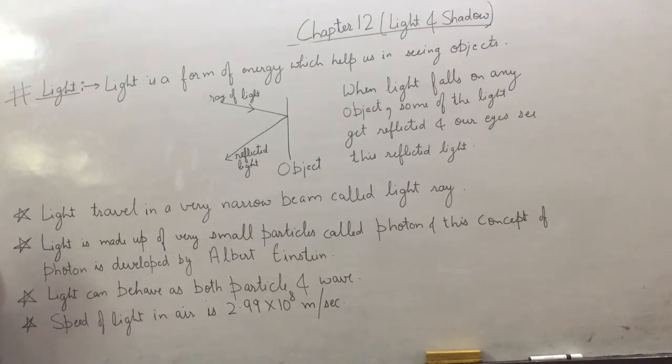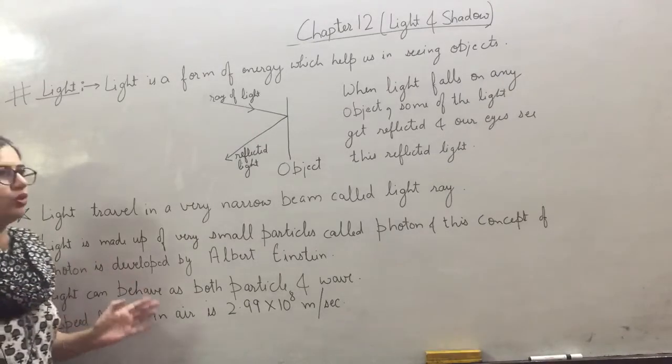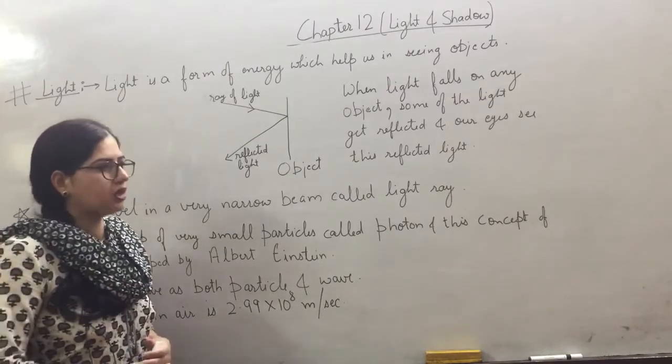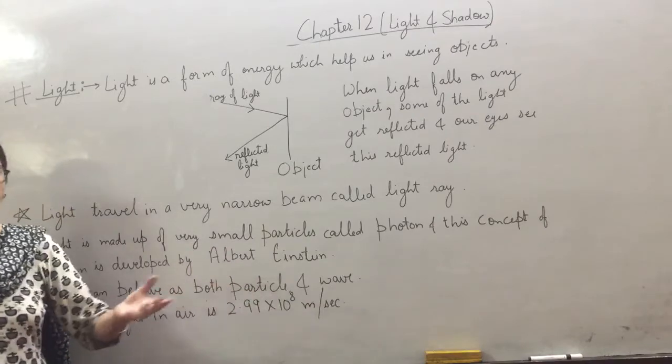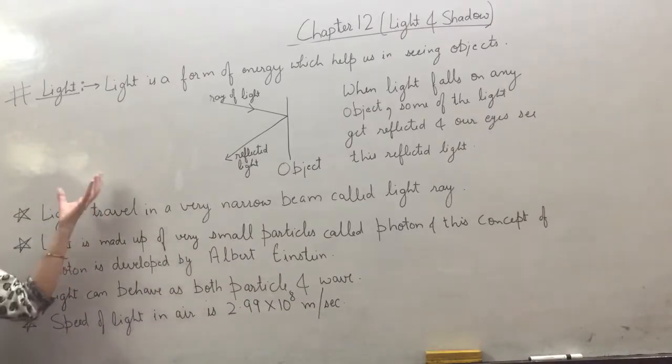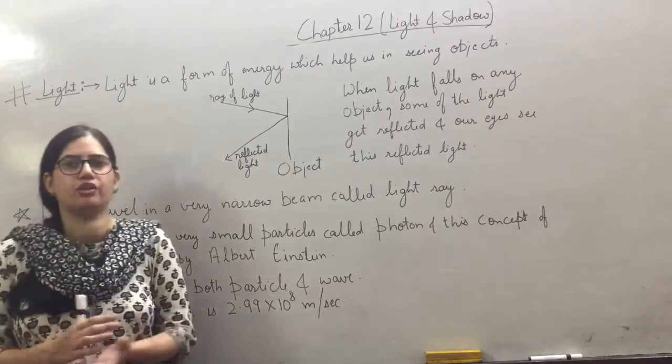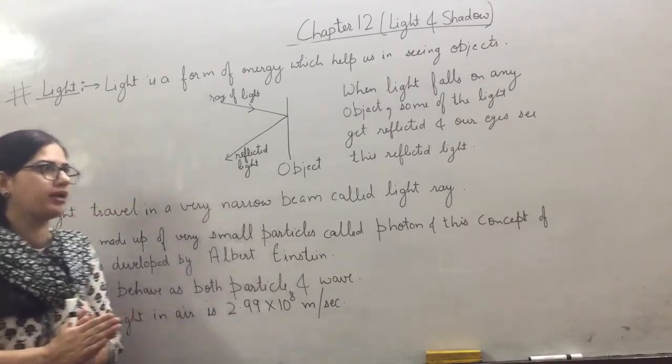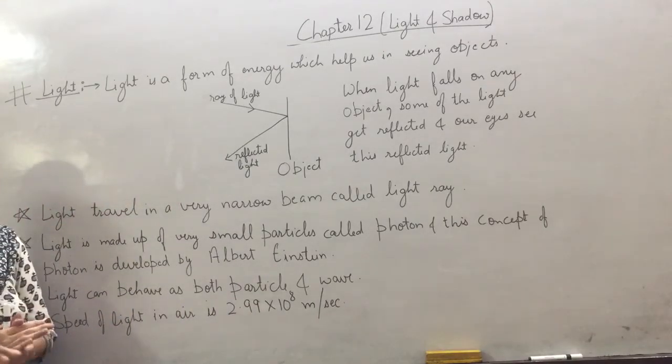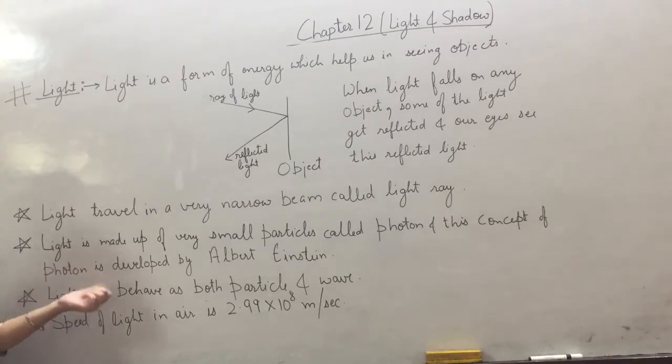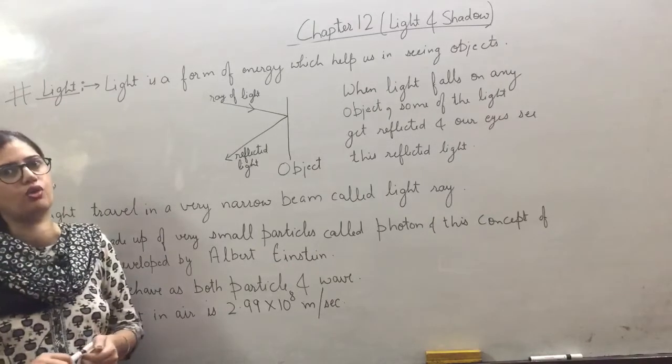Light is made up of very small particles called photon. Suppose if we talk about this pen, or we talk about this blackboard, or this duster, everything is made up of atoms. The smallest particle of any matter is atom. Similarly, if you talk about light, the smallest particle is photon.